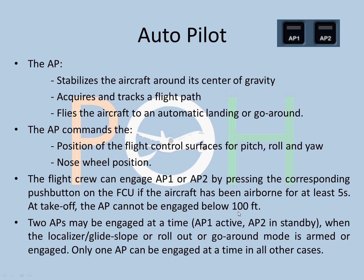The flight crew can engage Autopilot 1 or Autopilot 2 by pressing the corresponding push button on the FCU. It will only engage once the aircraft has been airborne for five seconds or is above 100 feet — it cannot be engaged below 100 feet. Two Autopilots may be engaged only during approach, generally only one Autopilot can be engaged at a time in all other cases. Two APs together are only available when glide slope, localizer, or go-around modes are armed or engaged.